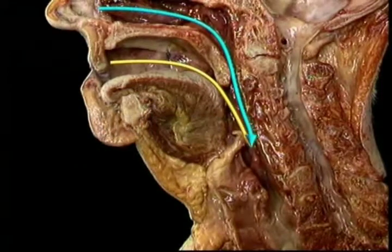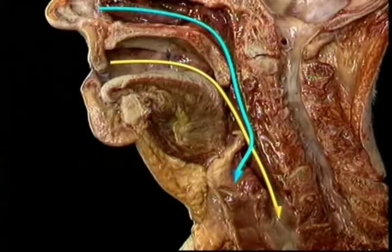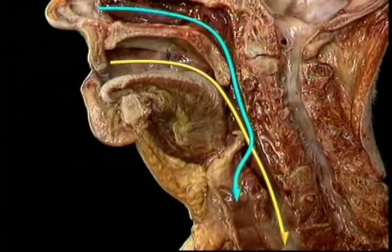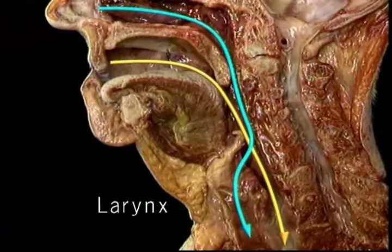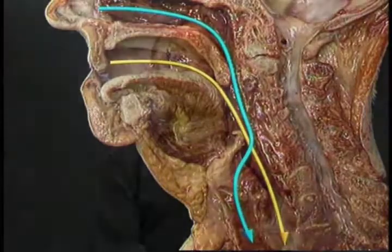The two passages separate again here in the hypopharynx. Food and liquid pass backward into the esophagus on their way to the stomach. Air passes forward through the larynx and into the trachea on its way to the lungs. So the lines of travel for air and for food and liquid cross over in the oropharynx. It's important that air on the one hand, and food and liquid on the other, don't pass upward or downward into the wrong passage.